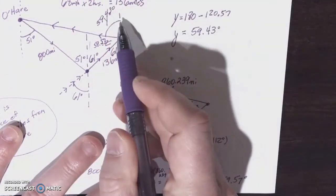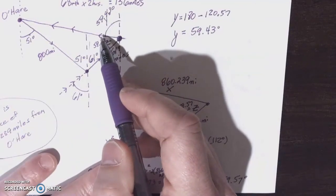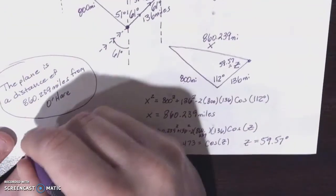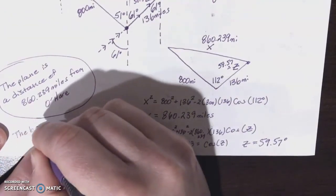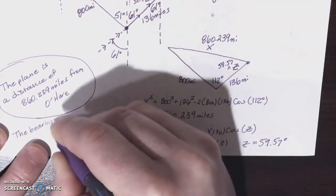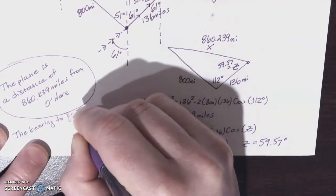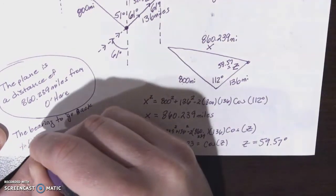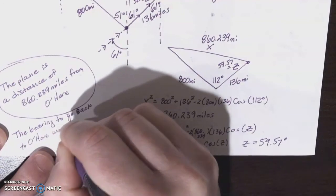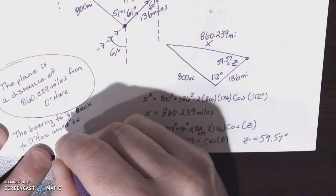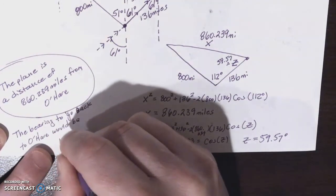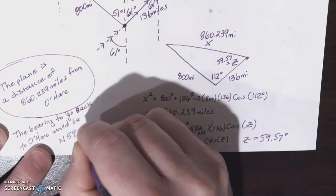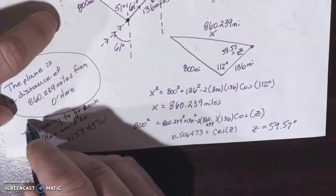So the bearing to go back to O'Hare would be 59.43 degrees west of north.